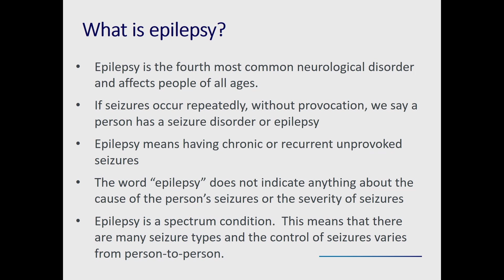Epilepsy is the fourth most common neurological disorder and affects people of all ages. If seizures occur repeatedly without any provocation or trigger, a person has epilepsy — meaning chronic or recurrent seizures without any trigger. The word epilepsy does not say anything about the cause of a person's seizures, the severity, or what the seizures might look like.